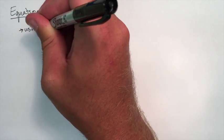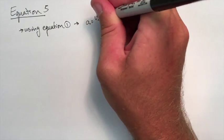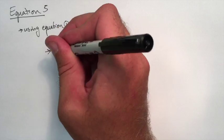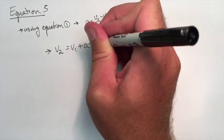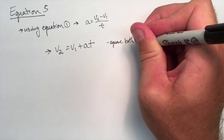The last equation, equation 5, this is more of an algebraic trick that we're going to play from the first equation. We're going to rearrange it for V2. Now to start, we're going to square both sides.